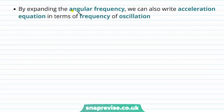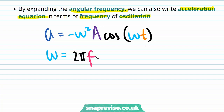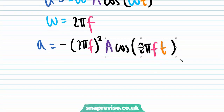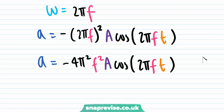By expanding the angular frequency, we can also write an acceleration equation in terms of frequency of oscillation. The acceleration equals minus omega squared times A times cosine of omega times t. Since omega equals 2 pi times frequency f, substituting this in gives: acceleration equals minus 4 pi squared times f squared times A times cosine of 2 pi f times t.